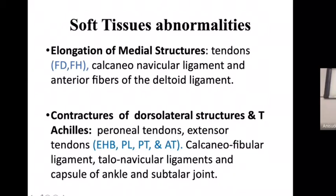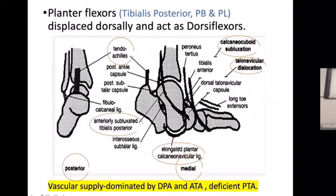The dorsolateral structures — including the calcaneofibular ligament, talonavicular ligaments, and the capsule of the ankle and subtalar joints — are contracted on the lateral side. The Achilles tendon is shortened, and the tibialis posterior and peroneus tertius are anteriorly subluxated and contracted, while medial structures are lengthened. The vascular supply is dominated by the dorsalis pedis and anterior tibial artery, with deficiency of the posterior tibial artery.